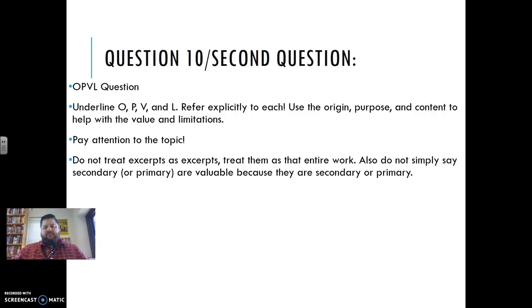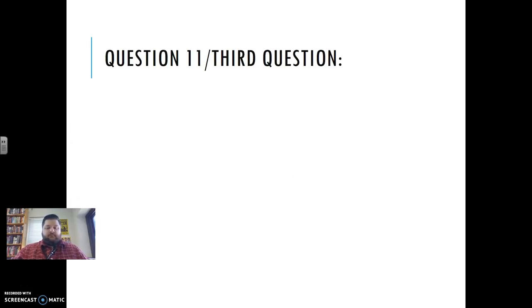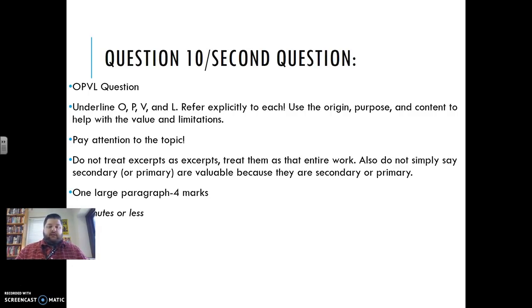Also, please don't just say, it's valuable because it's primary or it's limited because it's secondary. You know, those, if you have nothing else, you know, and Mr. Slinger might have something different to say about this, but if you have something else, you could, if you don't have anything, you could use those. But they tend to look down on that unless you give a really good reason why you feel that way. For this one, one large paragraph, it's worth four marks. I would spend seven minutes or less on this question. And that's about it for the second question. So it's always OPVL. Stick to the topic. Make sure you've got two good values and two good limitations and make sure those are related to origin, purpose, or content.